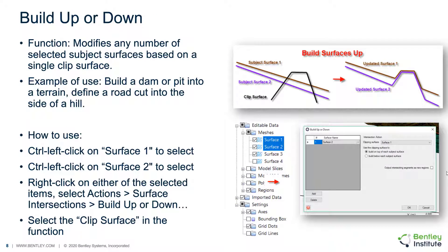The user should note the functionality to build surfaces up or down based on a single clipping surface. A typical example is to build an earth dam or an excavated pit into a terrain, or to define a road cut into the side of a hill. In the figure on the right, two selected surfaces and a clipping surface can be seen that the two surfaces are desired to follow up and over, which can be accomplished by the build up functionality.